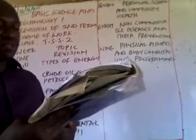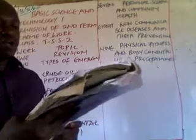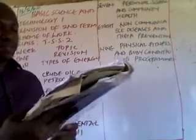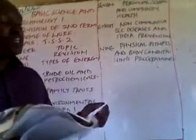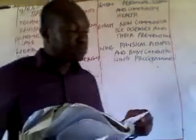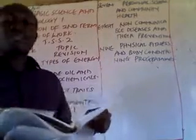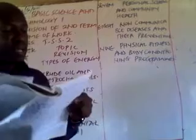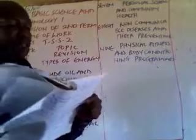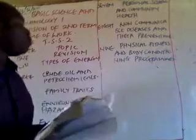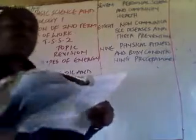We talked about the effects of pollution on the environment and personal health. The main effects include environmental degradation, human health impacts, global warming, ozone layer depletion, contamination from insecticides, an increase in waterborne diseases, and radioactive pollution.